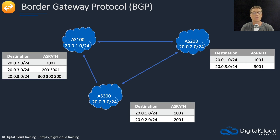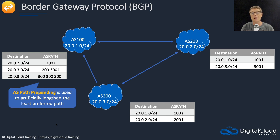Let's look at how we can influence routing. I've simplified the diagram. In this case, I want all traffic from AS 100 destined to AS 300 to go via AS 200 — so traffic to 300 goes to 200 first, then from 200 to 300. The way to do this is with AS path prepending, which artificially lengthens the least preferred path. Instead of just having '300 I', I've put '300 300 300 I'. It looks a bit silly, but it works — it makes the path appear much longer. So traffic to AS 300 will now go via AS 200 because that path is shorter than the artificially lengthened one.